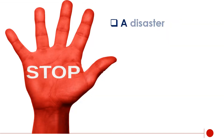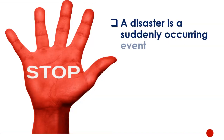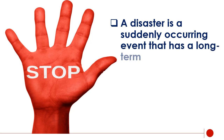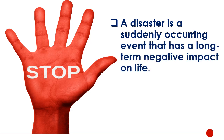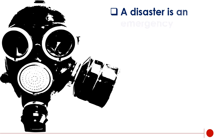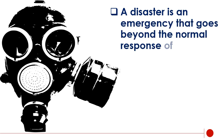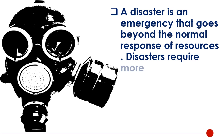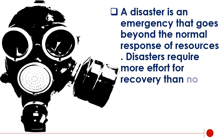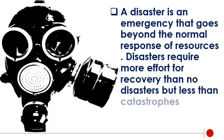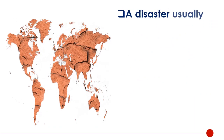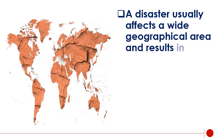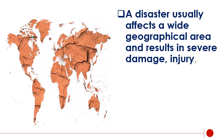A disaster is considered a catastrophe if facilities are destroyed. A disaster is a suddenly occurring event that has a long-term negative impact on life. A disaster is an emergency that goes beyond the normal response of resources. Disasters require more effort for recovery than non-disasters but less than catastrophes. A disaster usually affects a wide geographical area and results in severe damage, injury, loss of life, and loss of property.